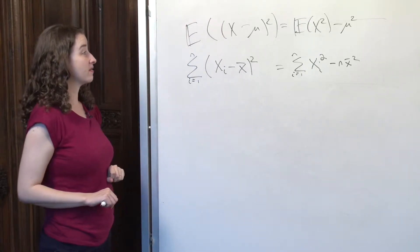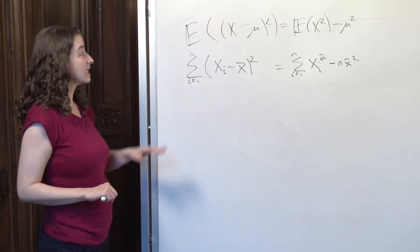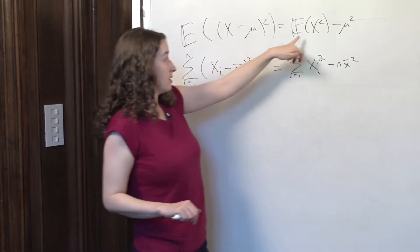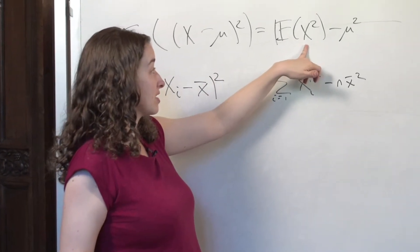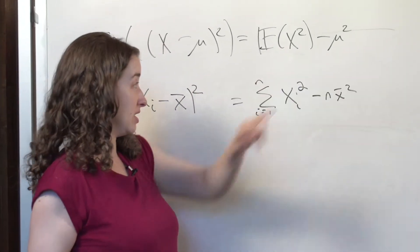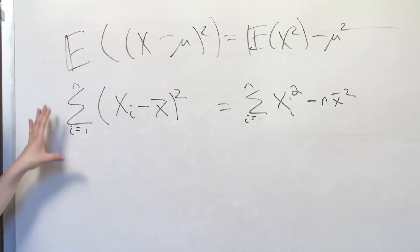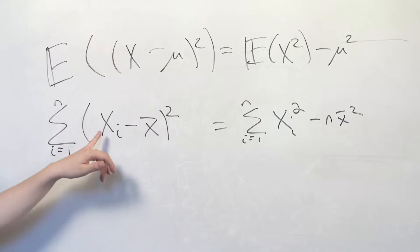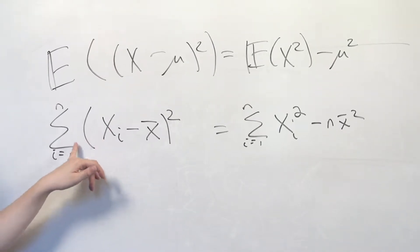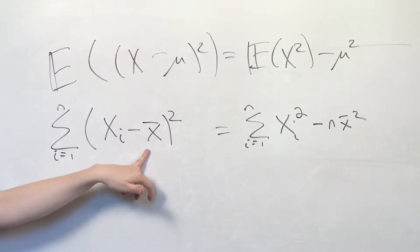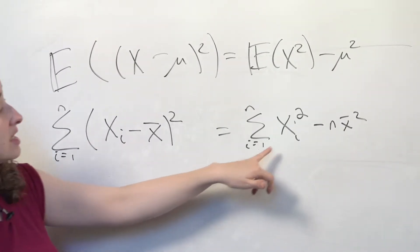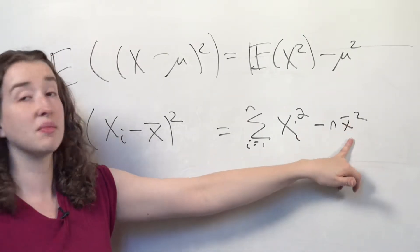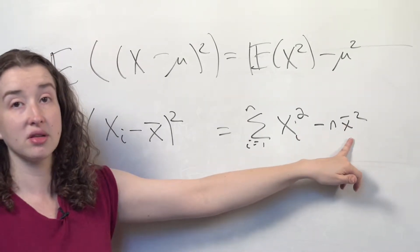We've done a very similar derivation twice. At the population level, we showed that the variance can be expressed as the expectation of x squared minus mu squared. We showed that the numerator from the sample variance can be expressed as not just the sum of the differences between the xᵢ's and the x-bars, but as the sum of all the squared values in the sample minus n times the mean of the sample squared.